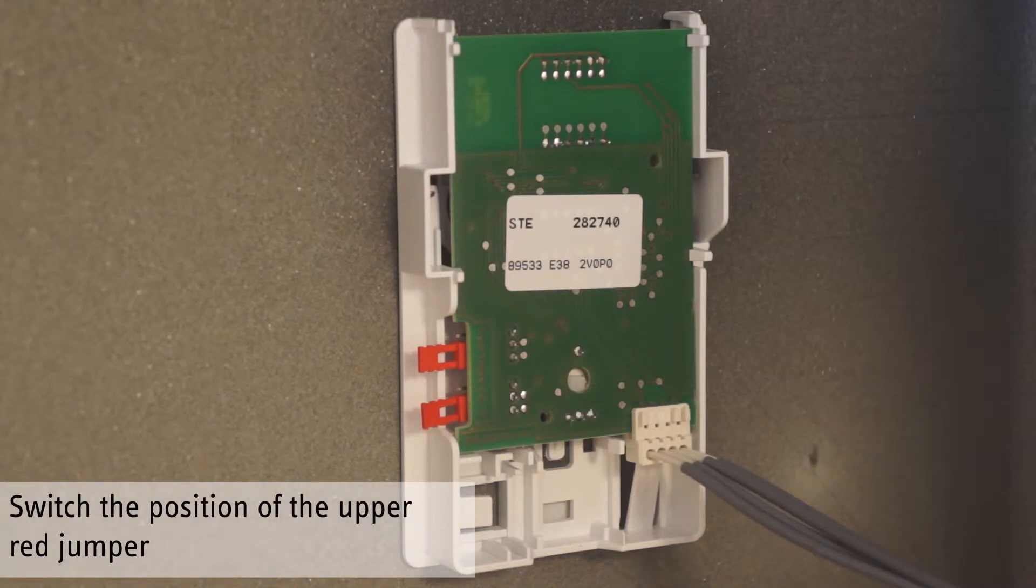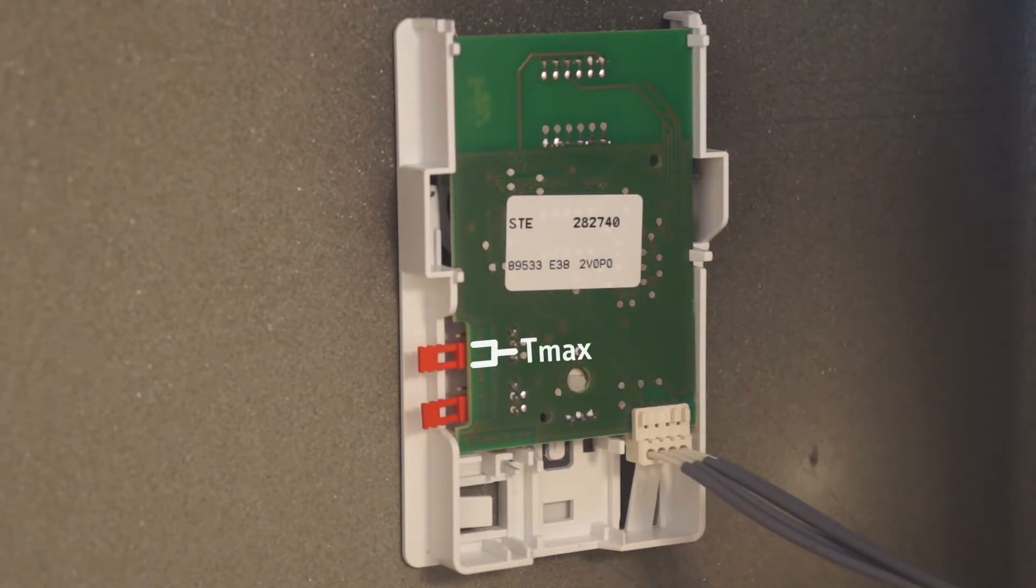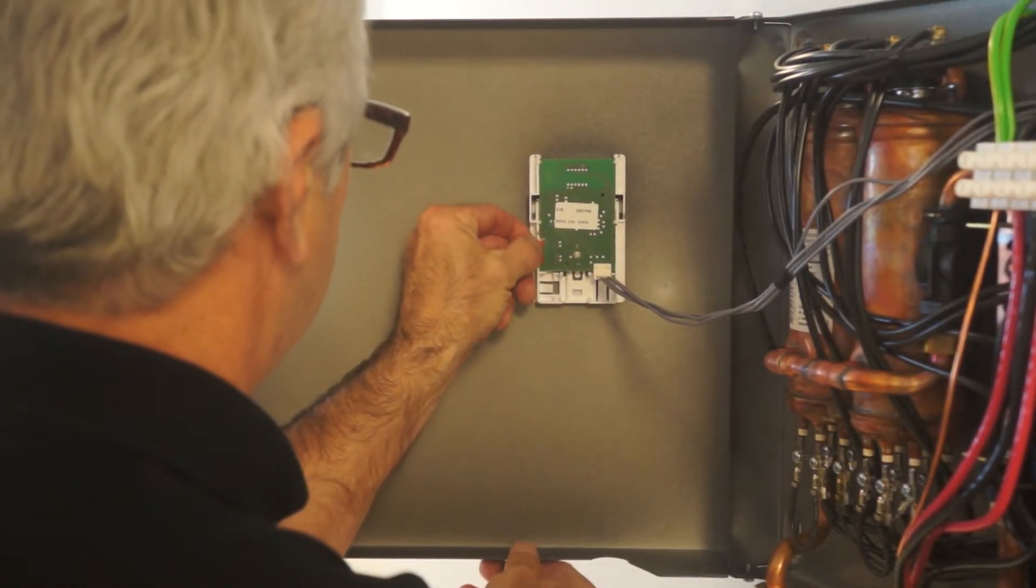The unit comes factory set to TMAX or 140 degrees Fahrenheit. To switch the unit to TRED for a maximum output of 109 degrees Fahrenheit, remove the upper red jumper from the bottom and middle contacts and reinsert it on the middle and upper contacts.